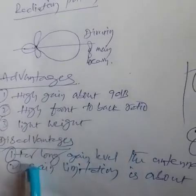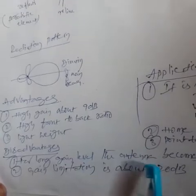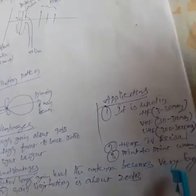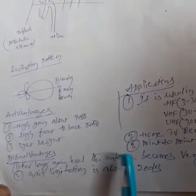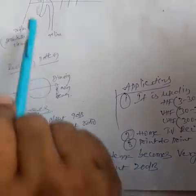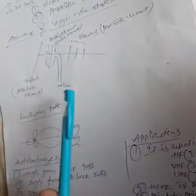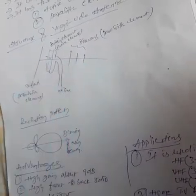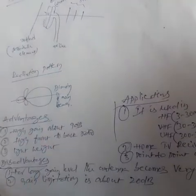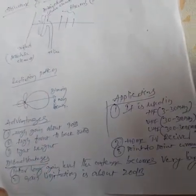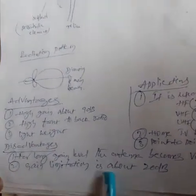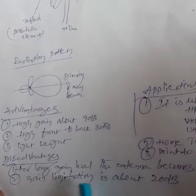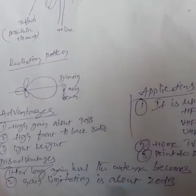The disadvantage is that for higher gain levels, the antenna becomes very long. If you want more gain, the antenna length increases automatically, and the cost also increases. Another drawback is the gain limitation, which is about 20 dB. So the gain is limited in the Yagi-Uda Antenna to 20 dB.